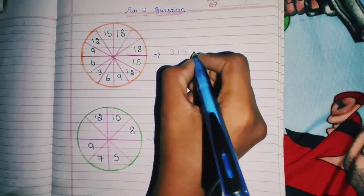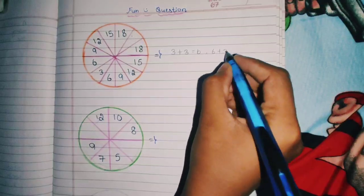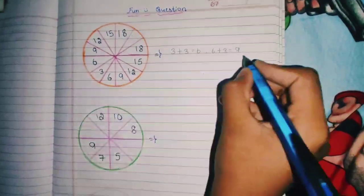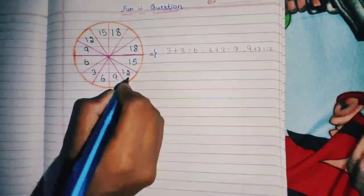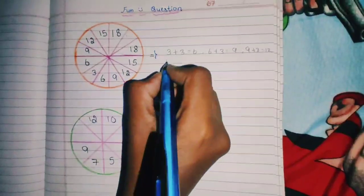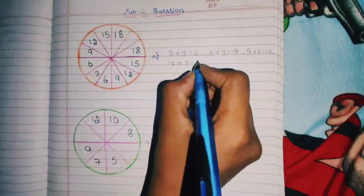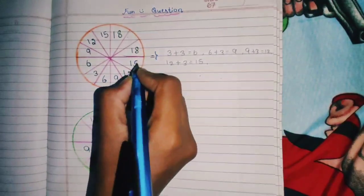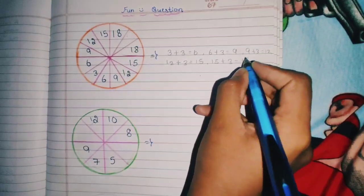3 plus 3 equals 6. Then 6 plus 3 equals 9. 9 plus 3 equals 12. 12 plus 3 equals 15. 15 plus 3 equals 18.